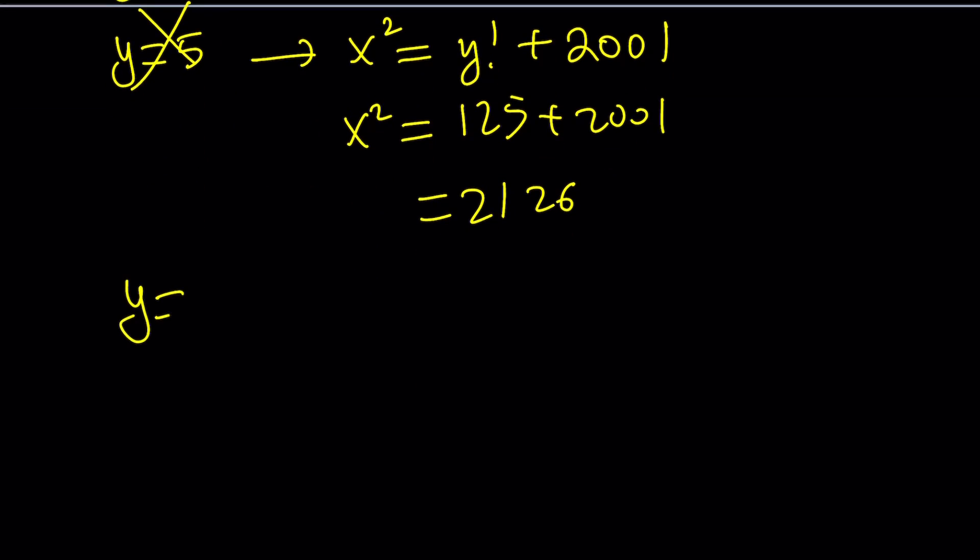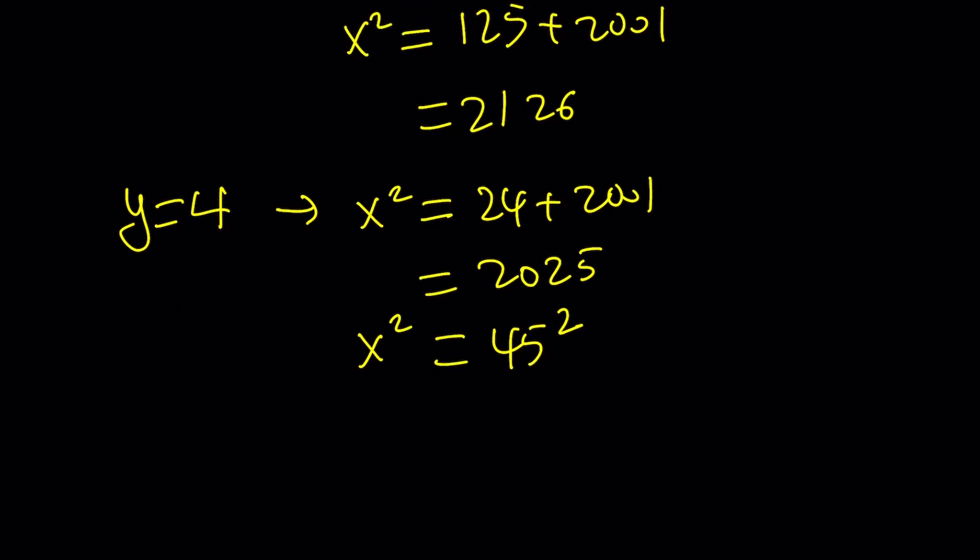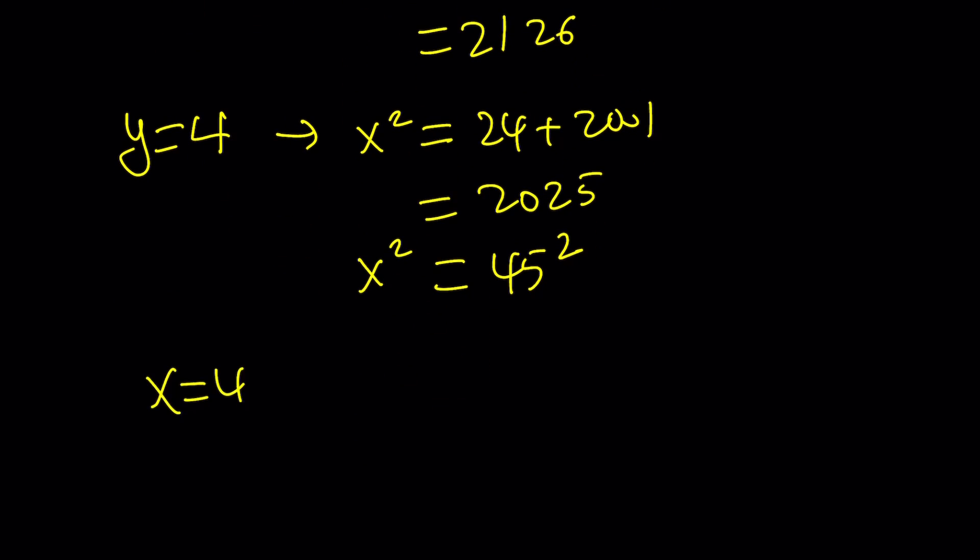Let's test y = 4. If y equals 4, then we are going to get x² = 4! + 2001, which is 24 + 2001, that equals 2025. And that happens to be 45². Therefore, from here we get two solutions: x = 45 and x = -45. We are looking for integers, not just positive integers.